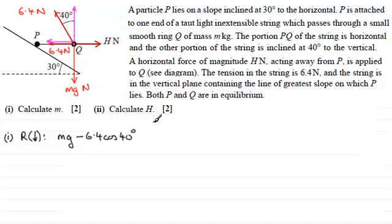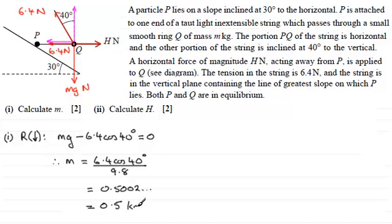But because Q is in equilibrium, then that resultant force must equal zero. So if I rearrange this for m by adding 6.4 cosine of 40 degrees to both sides, and then dividing by g, I'll take g as 9.8. Then if we work this out, you end up with 0.5002 and so on. If I round this to one decimal place, it's going to equal 0.5. So the mass will be 0.5 kilograms to one decimal place. That's the mass m.